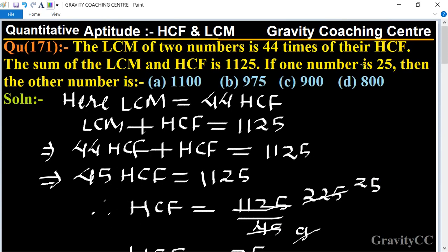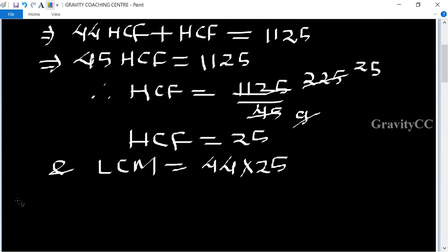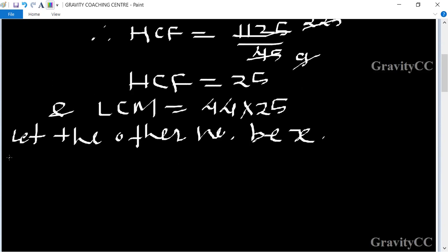One of the numbers is 25, so we need to find the other number. Let the other number be x. We know that the product of two numbers equals HCF times LCM.